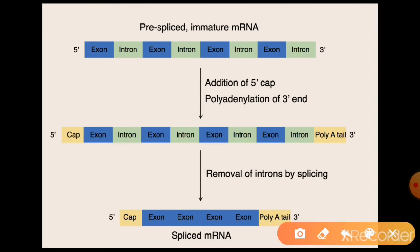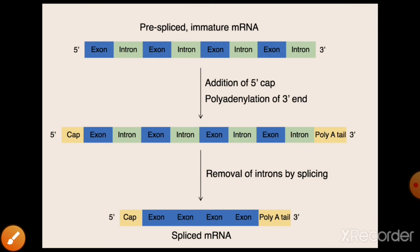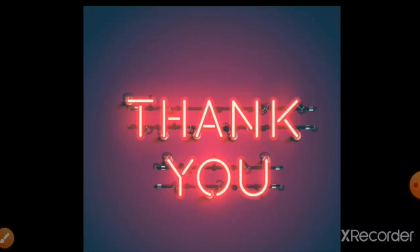This is another simple diagram showing the complete post-transcriptional modification: introns in green are removed by splicing, all exons are rejoined, a 5' cap is added at the five prime end, a poly-adenine tail is added at the three prime end. After splicing and capping and tailing, the mature messenger RNA is formed. This is the complete process of transcription - how messenger RNA is formed from the DNA template. Thank you all, thank you students for watching this lecture.